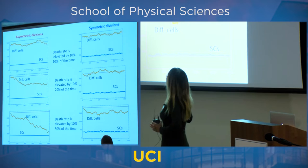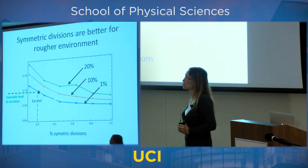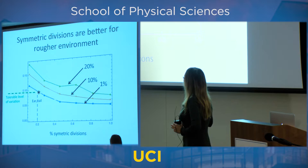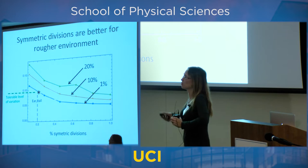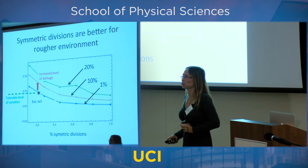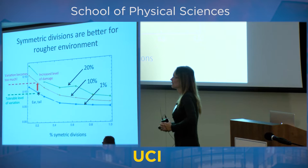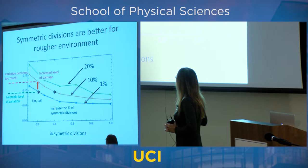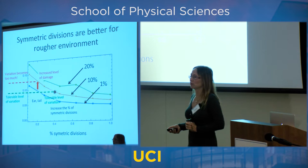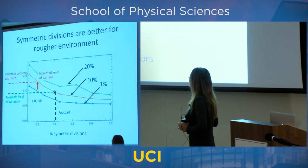This tells us the symmetrically dividing system is more resilient against noise. In the ear and tail, 20 percent symmetric divisions corresponds to the level of fluctuations those systems experience. When damage increases — like in the foot — variation becomes too much. So the system switches to 40 percent symmetric divisions, bringing variation back to a tolerable level. That's what happens in the foot pad: increase the number of symmetric divisions to resist noise.